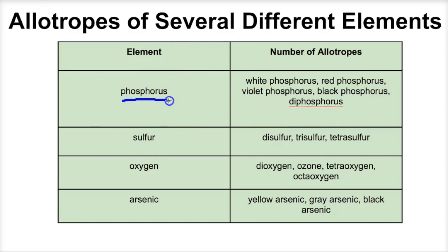For example, phosphorus can form several different allotropes: white phosphorus, red phosphorus, violet phosphorus, black phosphorus, and diphosphorus. These are all exactly chemically the same thing — they're all the element phosphorus, but they just exist in different forms.